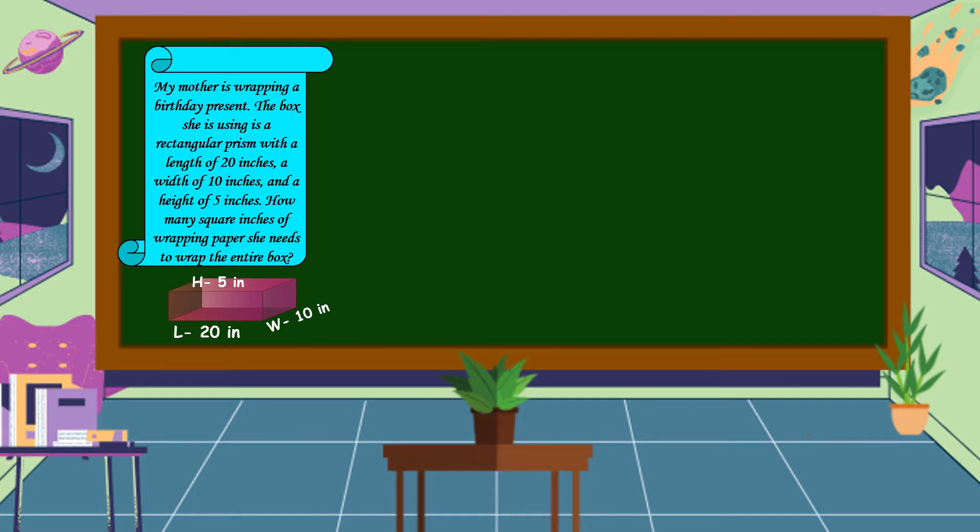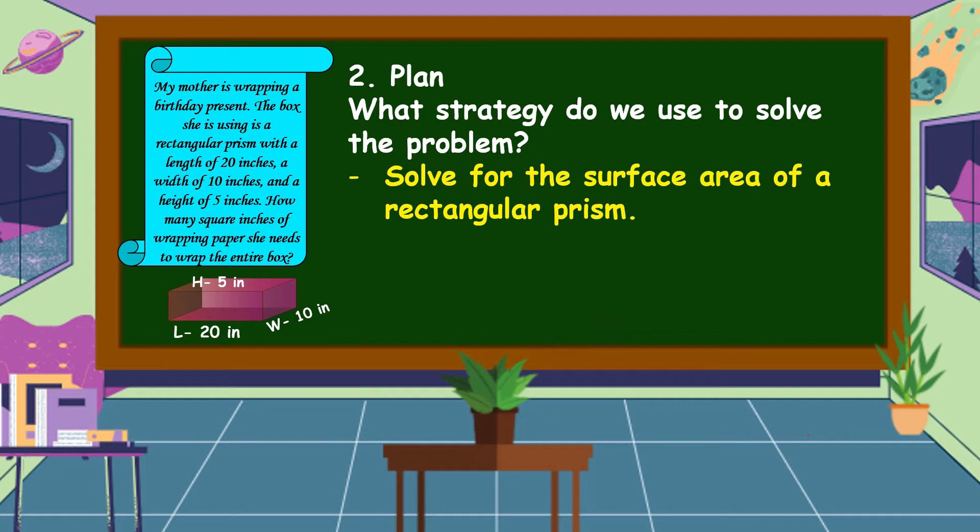What is the next step? Alright! The next step is we are going to make a plan. What strategy do we use to solve the problem? What do you think? How are we going to solve the problem? Yes, you are right. We are going to solve for the surface area of a rectangular prism.